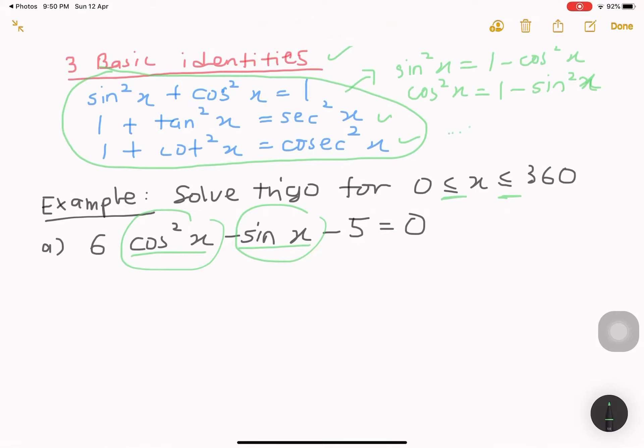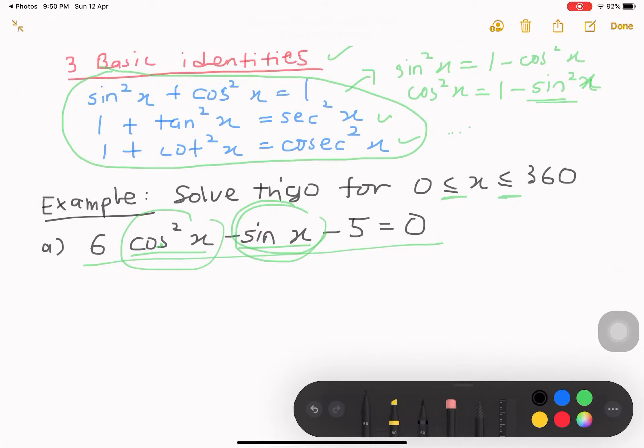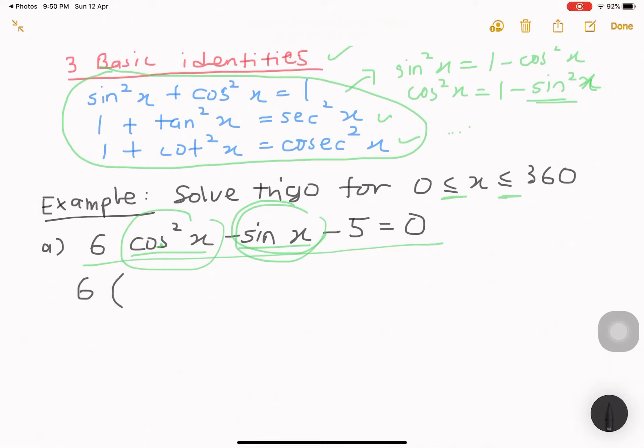We have cos square x and we have sin x. By using the basic identities here just now, we know that we have to change cos to sin so that we have the same trigonometric in one equation. So, what I do with that is...